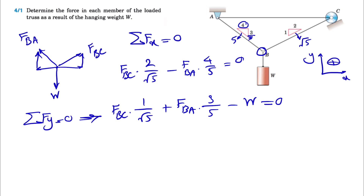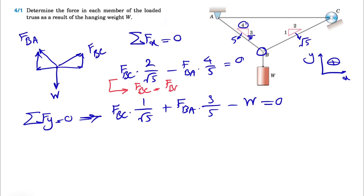From the ΣFx equation, we can find the relationship between FBC and FBA. FBC equals FBA times (4/5) times (√5/2), which simplifies to FBC = (2√5/5) · FBA.